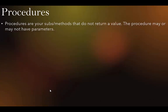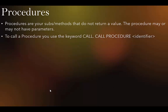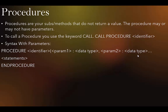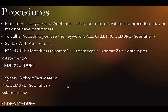Procedures are subs or methods that do not return a value. To call a procedure, use the keyword CALL followed by the procedure name. Syntax with parameters: PROCEDURE name(parameter1 : DataType, parameter2 : DataType) — statements — ENDPROCEDURE. This is like declaring variables but without the DECLARE keyword. Syntax without parameters: PROCEDURE identifier — code — ENDPROCEDURE. ENDPROCEDURE is one word.